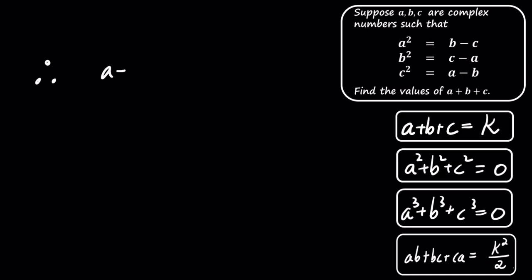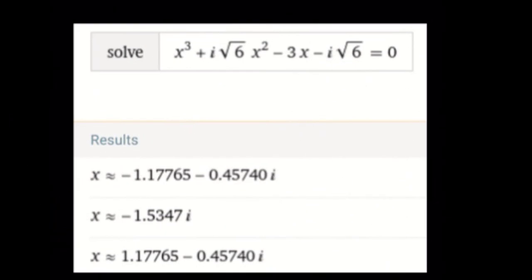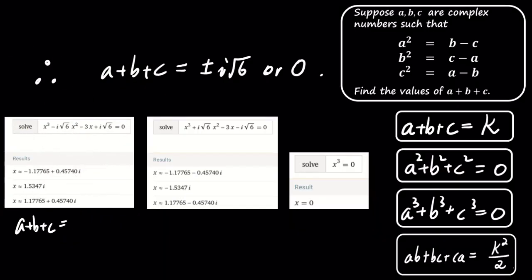After analyzing both cases, we conclude that the possible values of the sum of A, B, and C are plus or minus i times the square root of 6 and 0, as shown in our results. We verify these solutions by solving the polynomial which yields distinct complex roots that satisfy all our conditions.